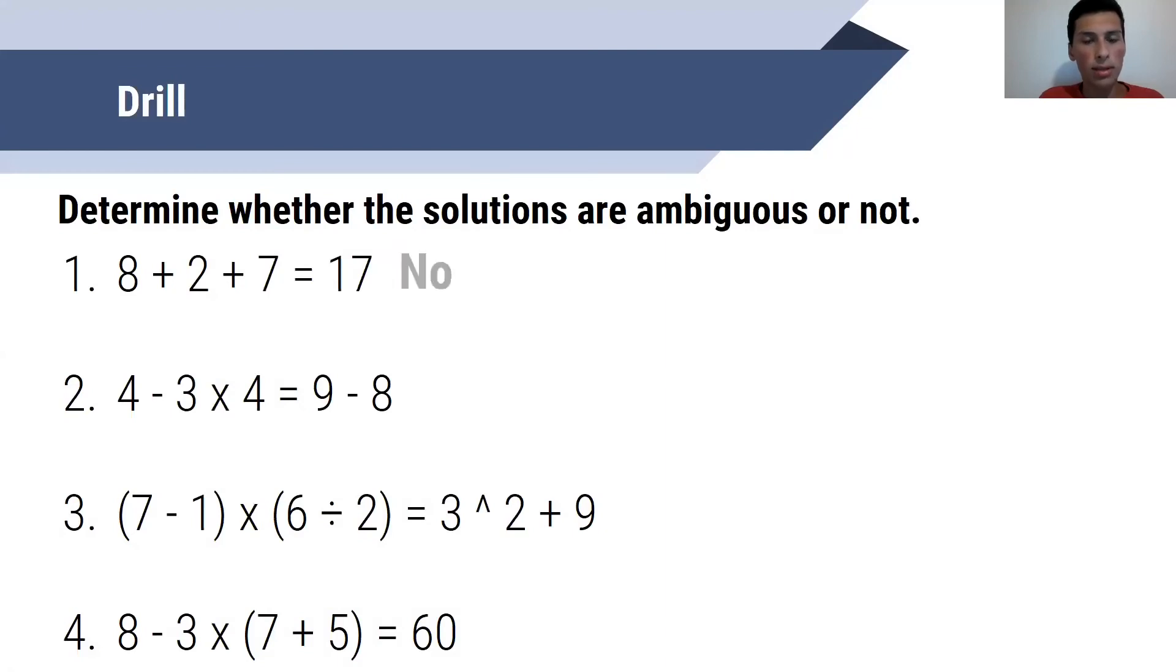So the answer to the first question, which is 8 plus 2 plus 7, is no, because both interpretations, regardless of whether you put parentheses around the 8 plus 2 or around the 2 plus 7, still yield the same result, which is 17.